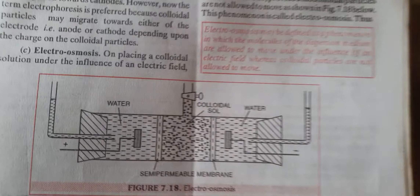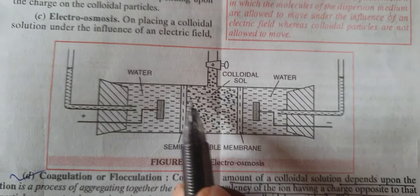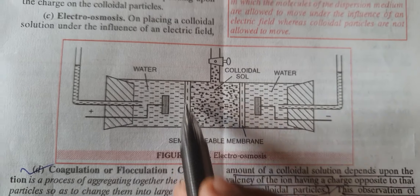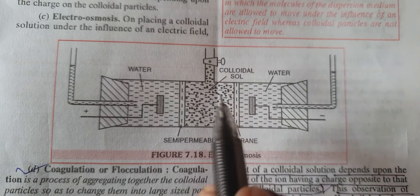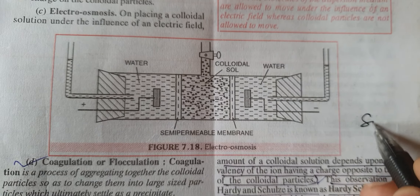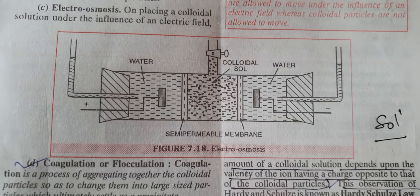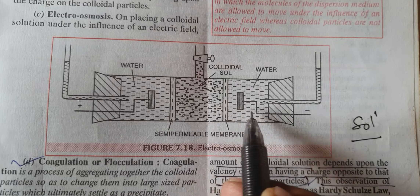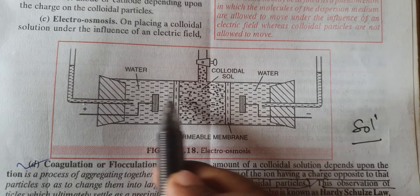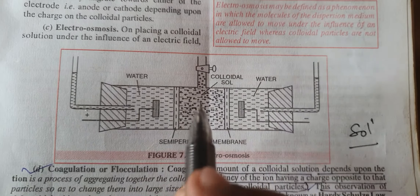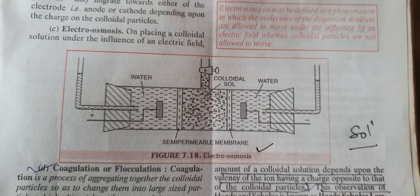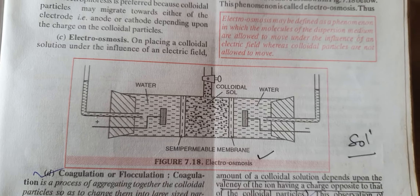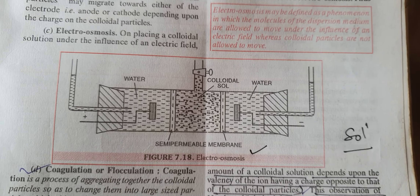Electroosmosis: here the colloidal solution is separated by a semipermeable membrane. The dispersed phase particles are not allowed to pass through; only the dispersion medium is allowed to move under the influence of the electric field. This movement of the dispersion medium through the membrane under an electric field is known as electroosmosis. In the next video, we will go into more properties.